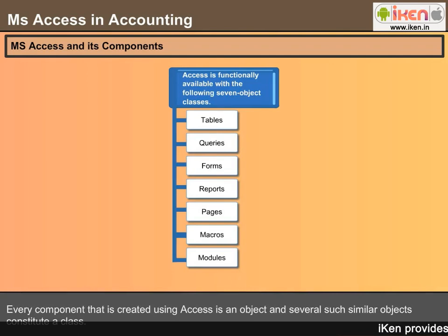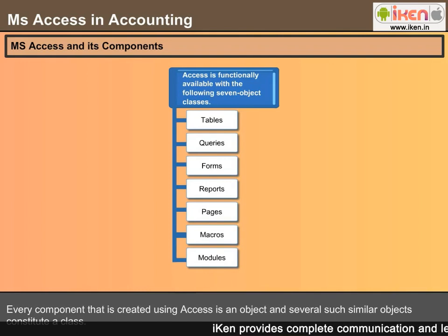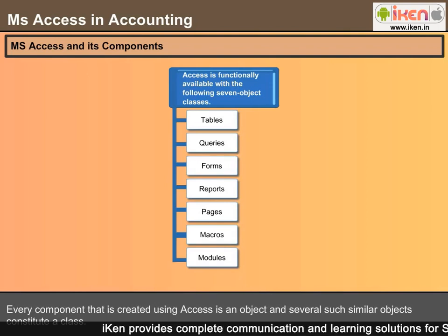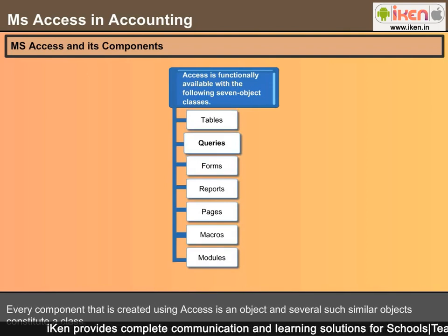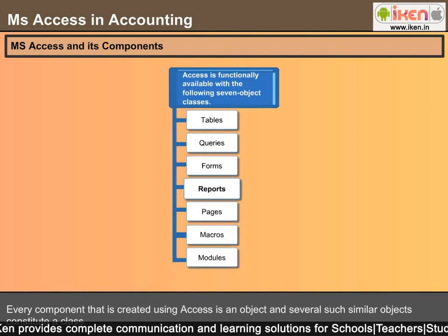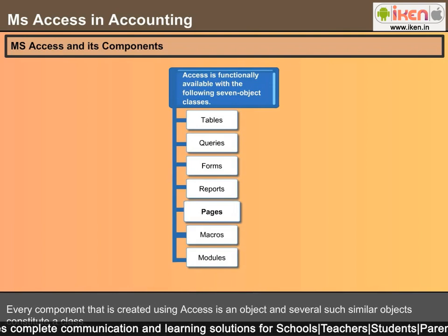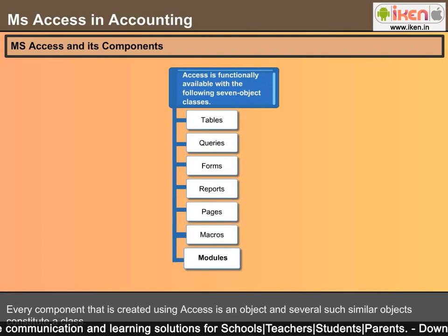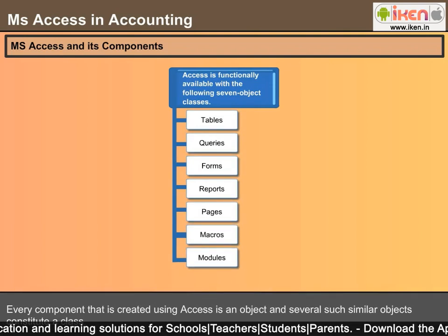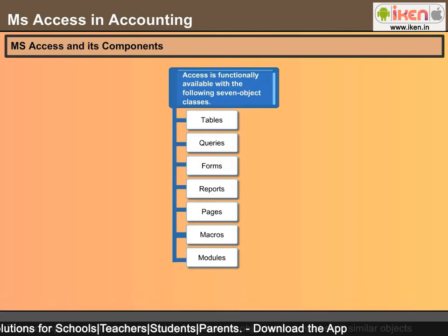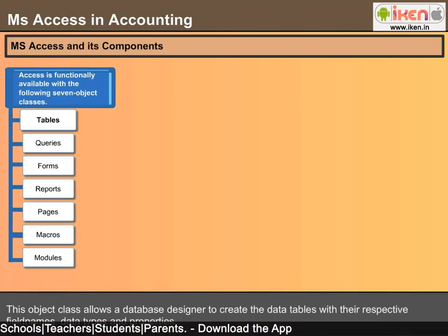Access is functionally available with the following seven object classes, each capable of creating their respective object replicas: Tables, Queries, Forms, Reports, Pages, Macros, and Modules. Let us take a quick look at each of them.